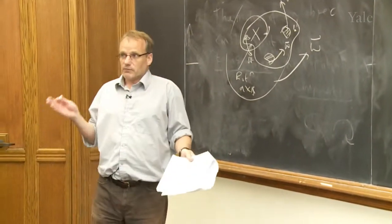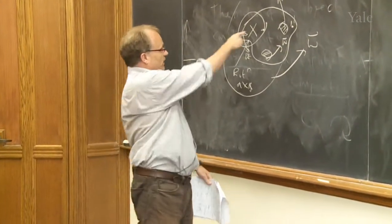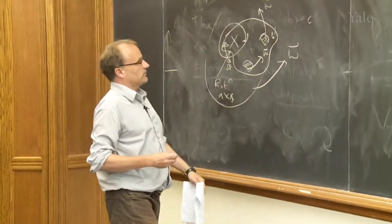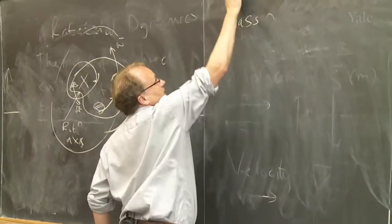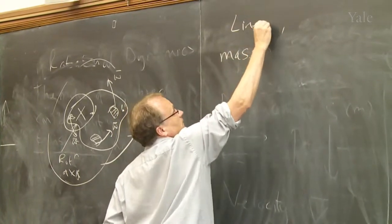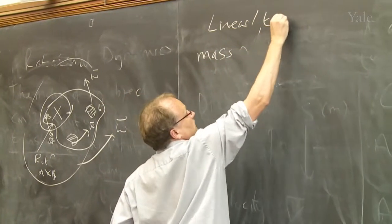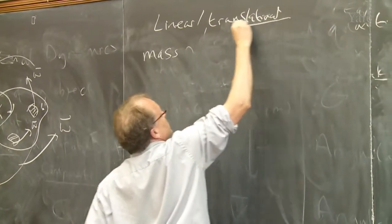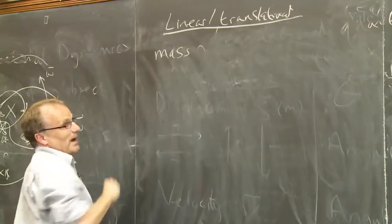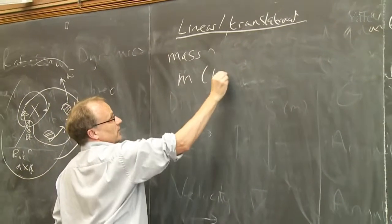Linear versus translational stuff. If we take this mass, so we have a mass. In linear, remember linear or translational, objects have mass, right? Symbol m, measured in kilograms.